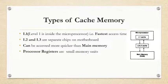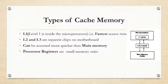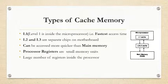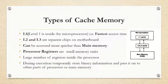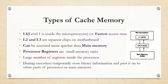The second type of internal processor memory is the processor register. These are small memory units, and there are a large number of registers inside the processor. Their function is to temporarily store data or pass binary information to other parts of the processor or main memory during program execution.